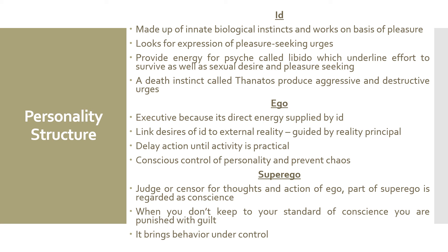Freud also describes a death instinct called Thanatos that produces aggression and destructive urges. According to Freud, our long history of wars and violence is evidence of such urges. The ego is often described as the executive because it directs the energy supplied by the id. The id can be described as a blind king or queen who has considerable power but must rely on others to carry out orders. The ego directs power by linking the desires of the id to external reality, guided by the reality principle — it delays action until the activity is practical or appropriate. The ego is the conscious control of personality. The superego acts as a judge or censor of the thoughts and actions of the ego. When you do not keep to the standards of your conscience, you are punished with feelings of guilt. The superego acts as a kind of parent to bring behavior under control.